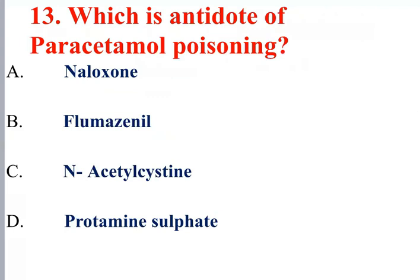Question 13: What is the antidote for paracetamol poisoning? The antidote is N-acetylcysteine. Other antidotes include heparin reversed by protamine sulfate, benzodiazepine antidote flumazenil, and opioid antidote naloxone.